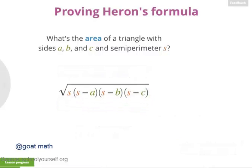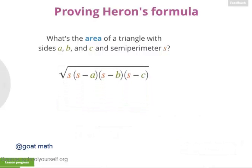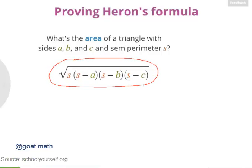Right, the area of a triangle in terms of its side lengths is the square root of s times s minus a times s minus b times s minus c.